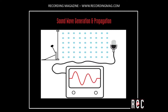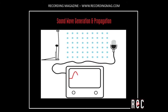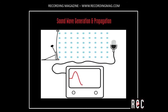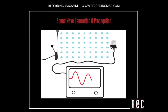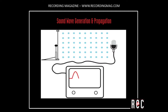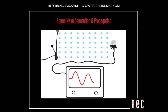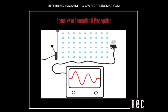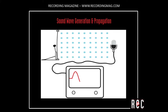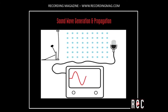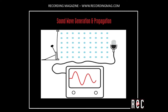One note about this drawing. Real air molecules are, of course, much, much smaller than what I've drawn. Also, unlike in this video, real-world sound does not move air molecules very far at all. In this way, sound waves are very similar to ripples on a pond — the actual water molecules do not move much in distance, but they pass along the wave energy through compression and rarefaction.